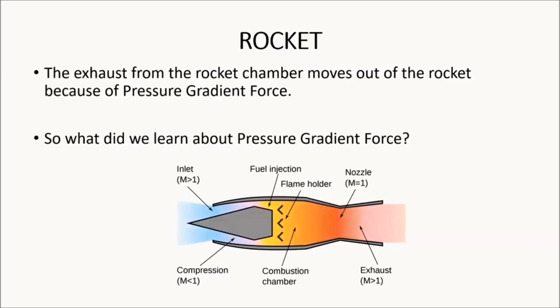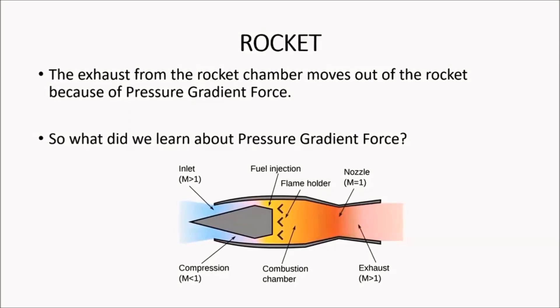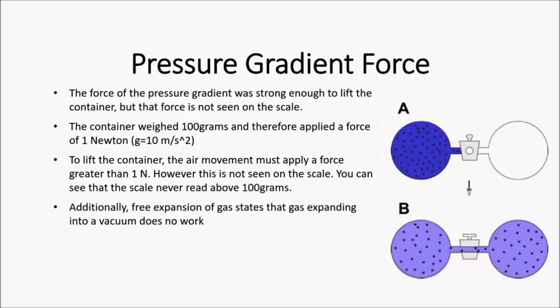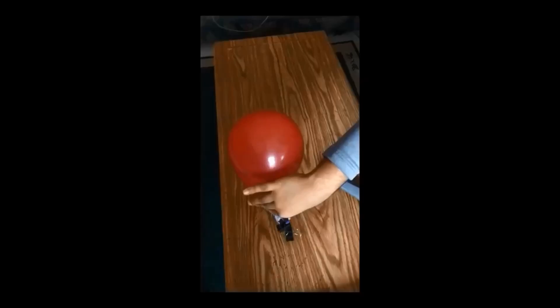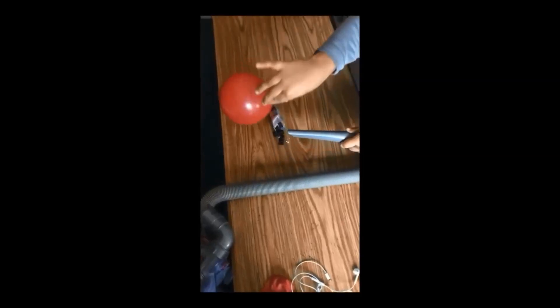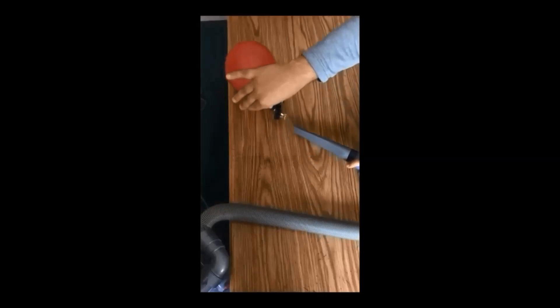So what did we learn about pressure gradient force? There is no opposite force, because Newton's third law cannot be applied exactly the way it was regarding walking, throwing, and rowing a boat. Pressure gradient force comes from potential energy, just like density and buoyancy. The balloon pushes off the atmosphere — if you put the vacuum hose near the opening of the balloon, the air moves into the hose without much resistance.